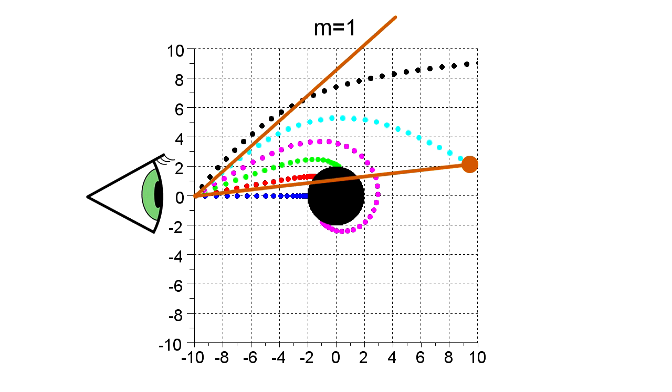In the presence of the black hole, light from this object strikes your eye at 40 degrees. And because our brains interpret light as moving in straight lines, you will therefore perceive the brown object as being in a very different direction in space.